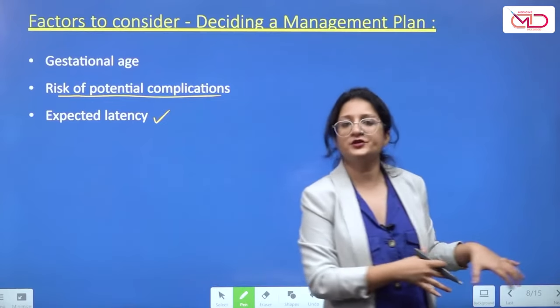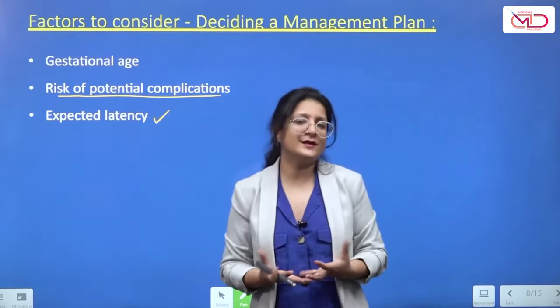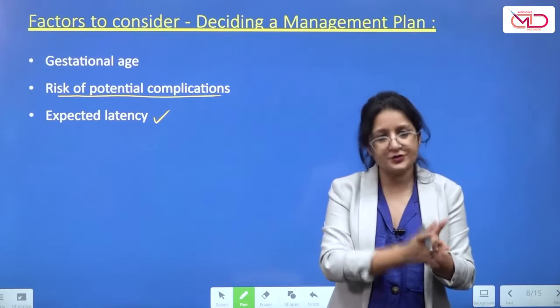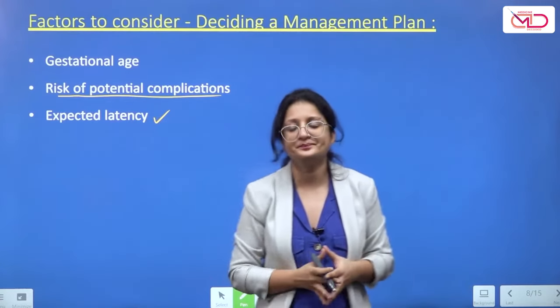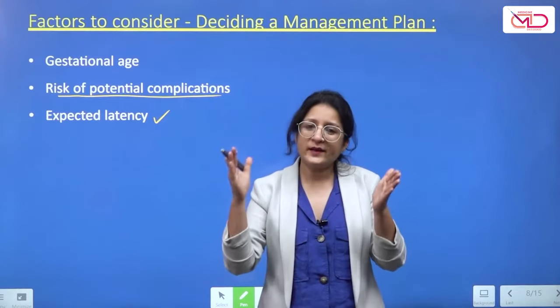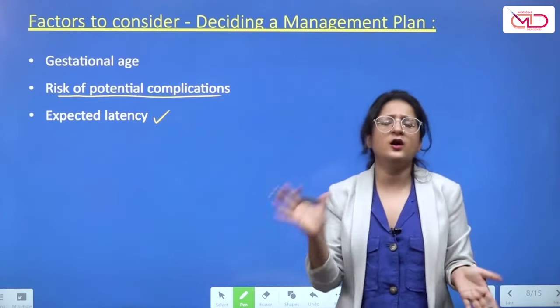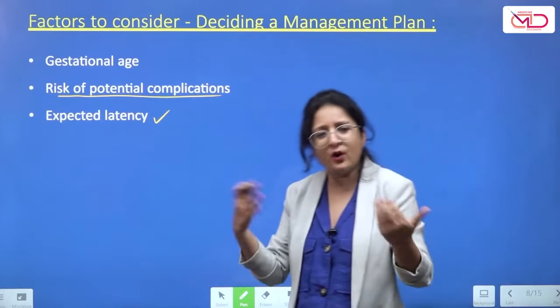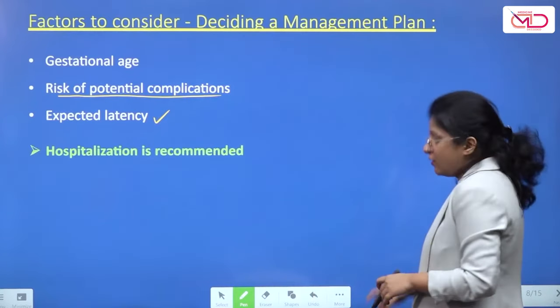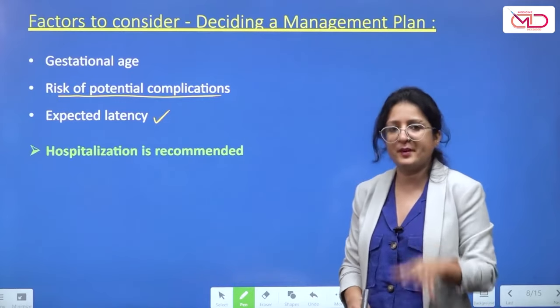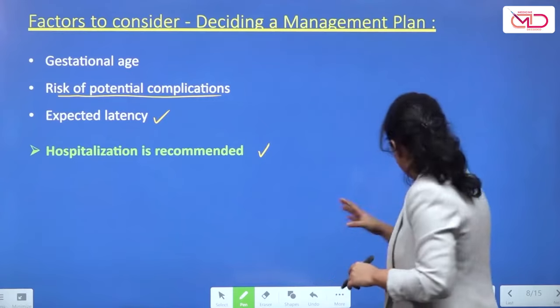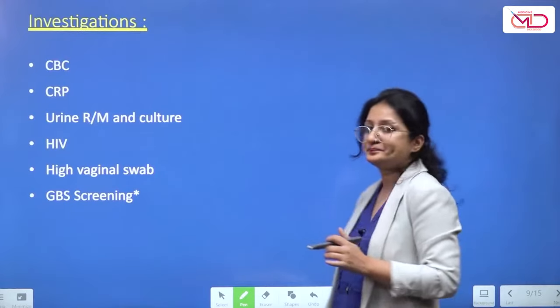The nearer to term she is, the faster she will go into labour and the shorter the expected latency. Further from term, you expect a longer latency. Overall the latency is usually about two to three weeks at maximum — beyond that not much is gained by waiting.